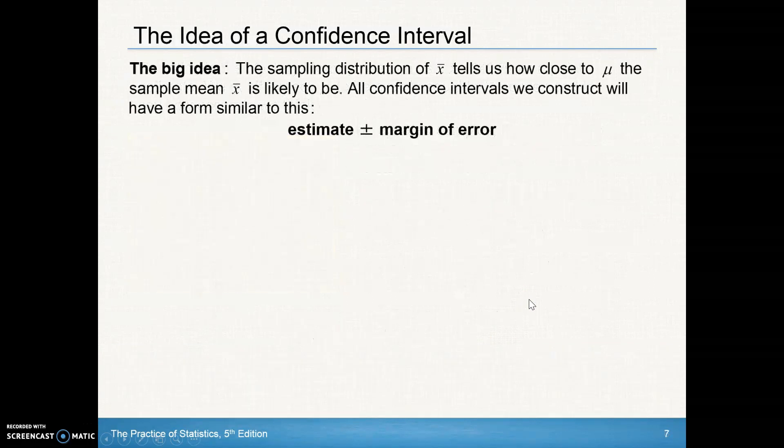So here's the big idea. The sampling distribution of x-bar, the distribution of all the x-bars that we took, tells us how close to mu the sample mean is likely to be. All confidence intervals we construct will have a form similar to this. We'll have our estimate. In this case, it was our x-bar. And we'll have that plus or minus that margin of error. And there we had two standard deviations, plus or minus, from that value.